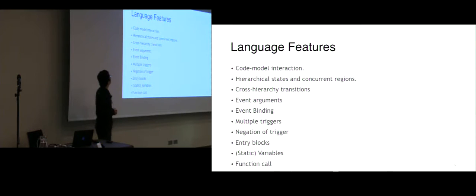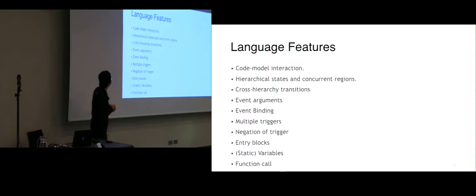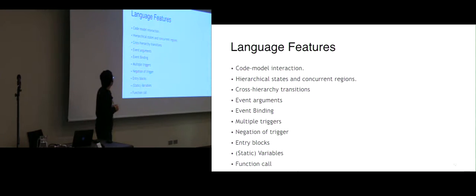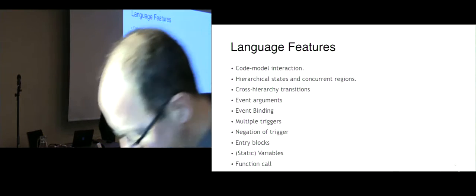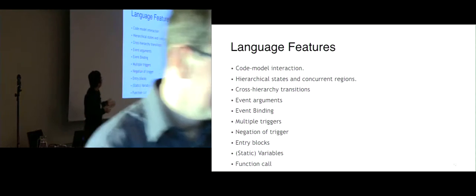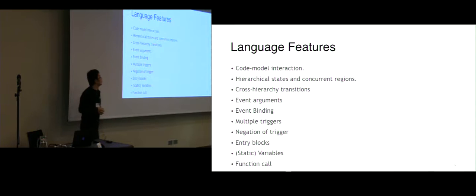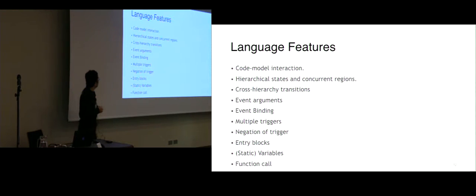Here is a summary of BSML Embedder language features. First, code-model interaction: we can mix state machine models and C code together. Hierarchical states and concurrent regions within state machines. Cross-hierarchical transitions, meaning the source and target states don't necessarily need to be within the same region. Event arguments, event binding, multiple triggers for a transition, negatable triggers, entry blocks defined under regions or states, state machine variables that can be static, and function calls.